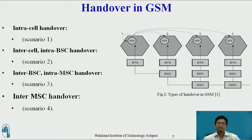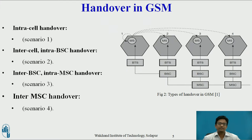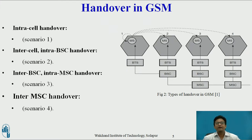The first type is IntraCell handover. This is handover within a cell. A narrowband interference could make transmission at a certain frequency impossible, so the BSC may decide to change the carrier frequency. This type of handover is performed to optimize traffic load in a cell or to improve connection quality by changing the carrier frequency.